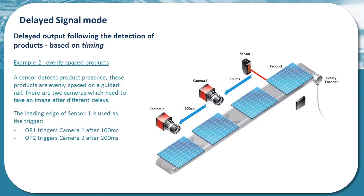Now we take the delayed signal principle and introduce a situation where multiple outputs need to be triggered from the product sensor at different times. In this example, the application uses an indexing conveyor, with the result that products are evenly spaced through the inspection part of the process. The timing option is therefore selected, with a delay of 100 ms from the product sensor triggering camera 1, and a 200 ms delay from the sensor triggering camera 2.